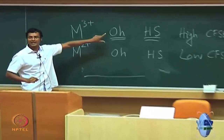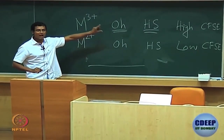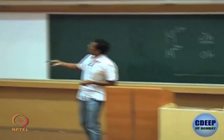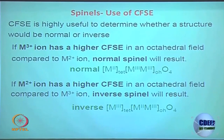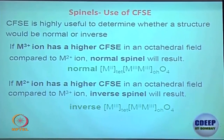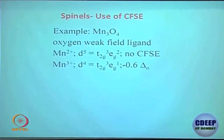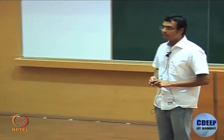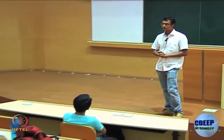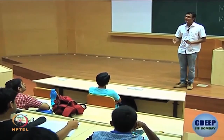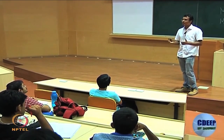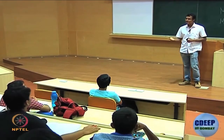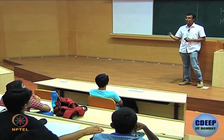It is written clearly: M3+ has higher CFSE in an octahedral field compared to M2+ for normal Spinel. Do not calculate for tetrahedral cases. You simply figure out the stability of M3+ versus M2+ using octahedral CFSE. CFSE for tetrahedral is usually 4/9 of delta-O, which complicates things, so stick to octahedral comparison.